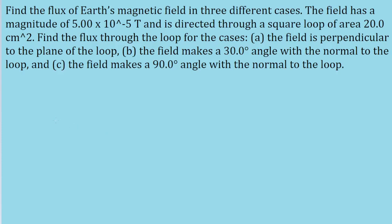Hey, everyone. In this problem, we have three different parts all asking us to find the flux of a magnetic field through a certain loop. Since all three parts are basically the same, we're always going to be using the same basic formula, which states that the magnetic flux through a loop is equal to B, the magnitude of the magnetic field, multiplied by A, the surface area of the plane of the loop, multiplied by the cosine of theta, where theta is the angle between the normal to the plane of the loop and the direction of the magnetic field.